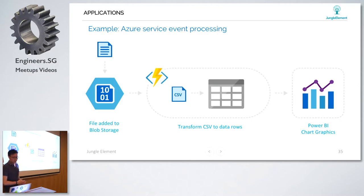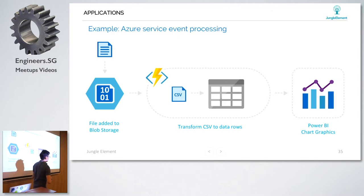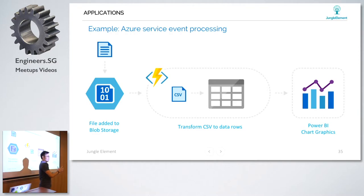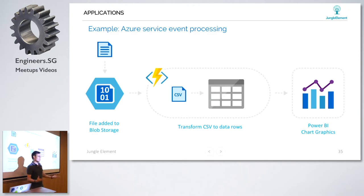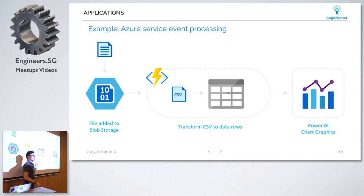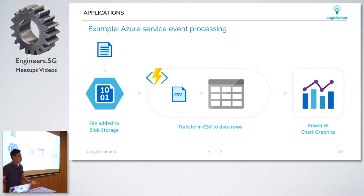Azure service event processing is also common - you receive a file coming in from blob storage. You can use Azure Functions to pull information from Azure Blob Storage, transform the information within the blob storage, transform data from CSV to whatever format you need. Then tell the function to send that to Power BI - you have a whole data analytics pipeline at your fingertips. The only concern is how to manipulate and clean up data within Azure Function, and the rest uses your current infrastructure. You can imagine how fast building a serverless application is going to be.